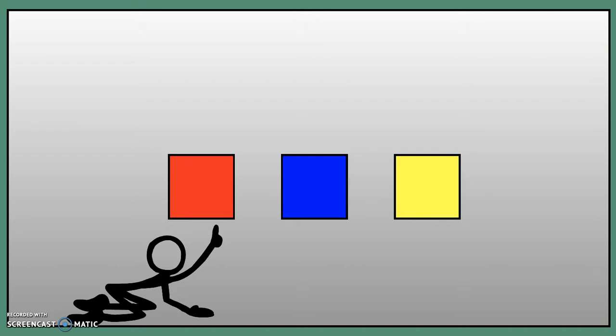Now do you notice anything special about these three colours you can see on the screen? The red, blue and yellow. These colours are called the primary colours. And by using these you can mix them together in different amounts and different ways to create all the other colours.